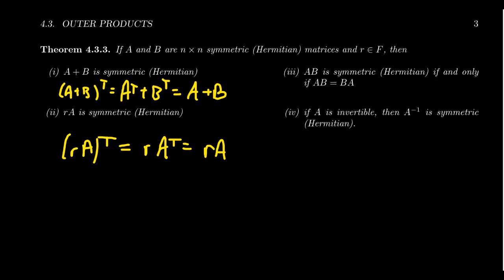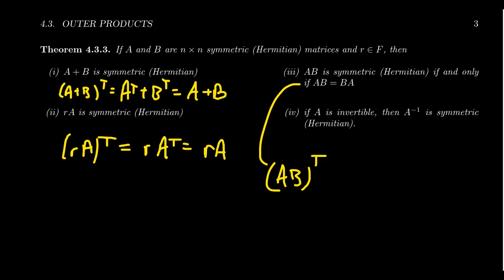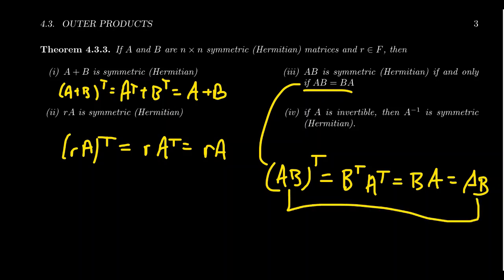We can also say something about multiplication. The product of two symmetric matrices will be symmetric if and only if the matrices commute. When you take the product AB and then take the transpose, by the shoe-sock principle it turns around to B transpose times A transpose. If these are symmetric matrices, B transpose is B and A transpose is A, giving BA — which is not necessarily AB. But if they commute, then AB transpose equals AB, so AB would be symmetric. So the product of symmetric or Hermitian matrices will be symmetric or Hermitian if and only if the matrices commute, which doesn't happen in general.